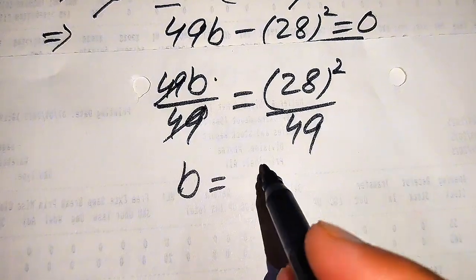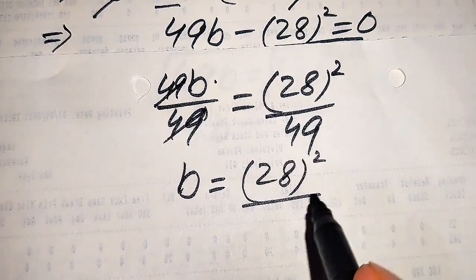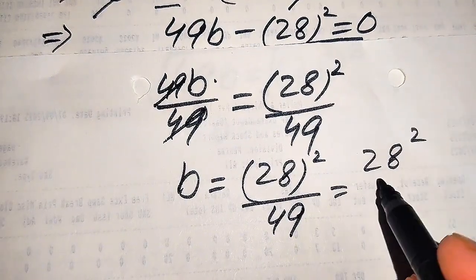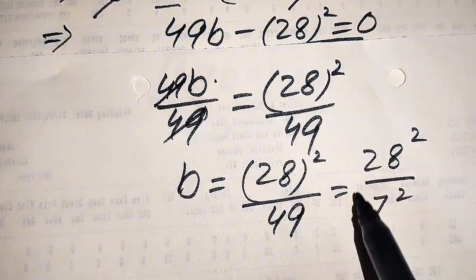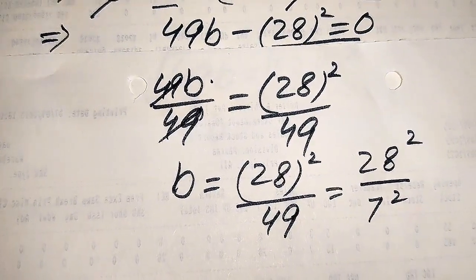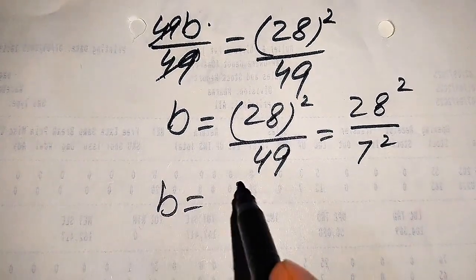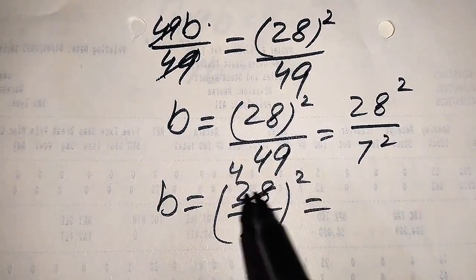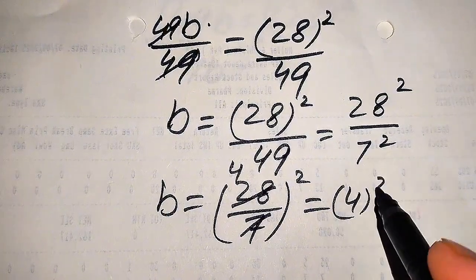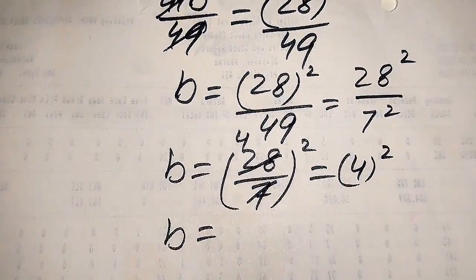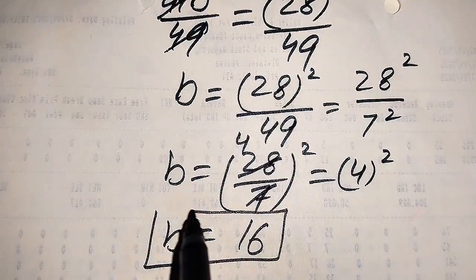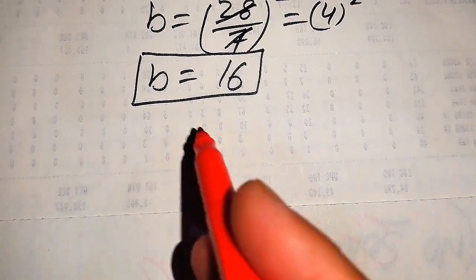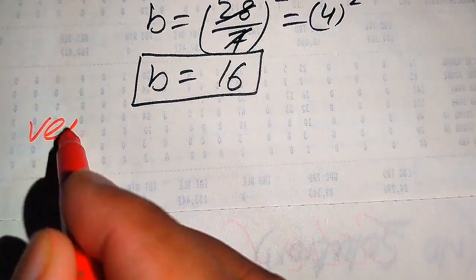We know that 49 = 7², so b = 28²/7². We combine the squares: b = (28/7)². Since 28 divided by 7 is 4, we get b = 4² = 16. So the value of b we obtain is b = 16.